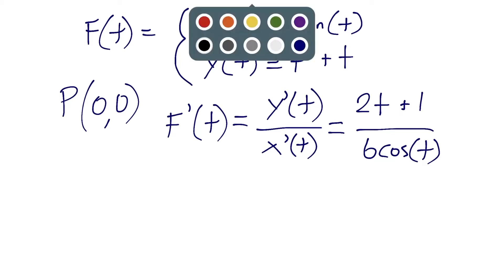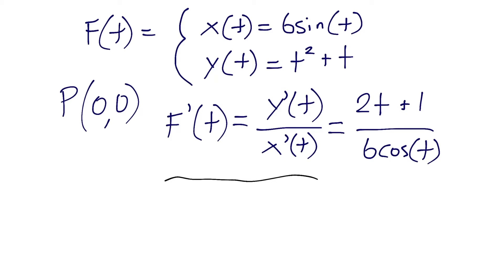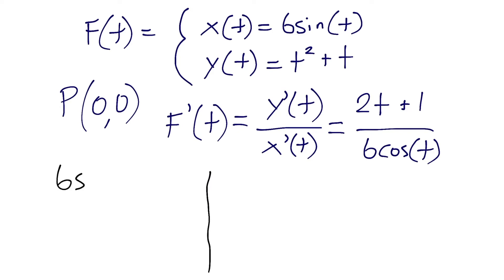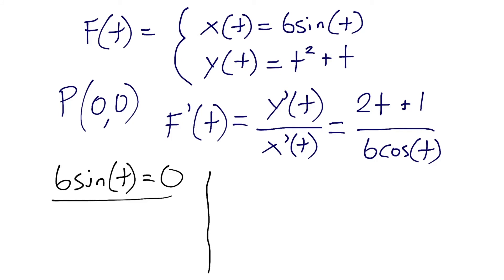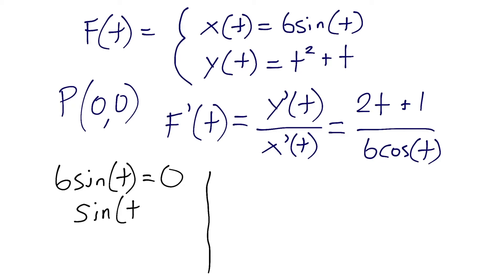We have y prime of t because we need to find the value of t at the point (0, 0). To do that, we take our x equation: 6 sine of t, and set it equal to 0. Dividing both sides by 6 gives us sine of t equals 0. When t equals 0, sine of 0 is 0, so the solution for the x equation is t equals 0.